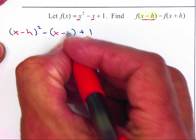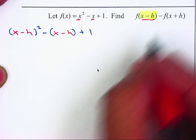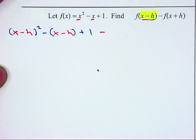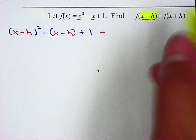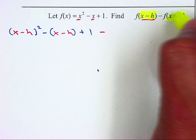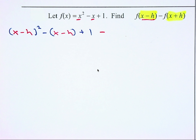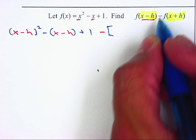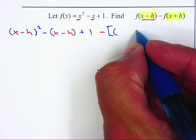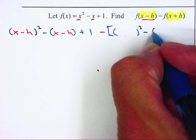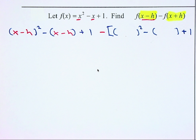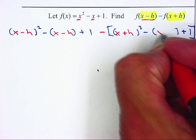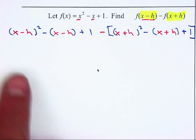Now I'm going to use the same f function and plug in x plus h. I'll set up with a bracket, so I still have minus x squared, making it x squared minus x plus one, then close the bracket and replace the x with x plus h.